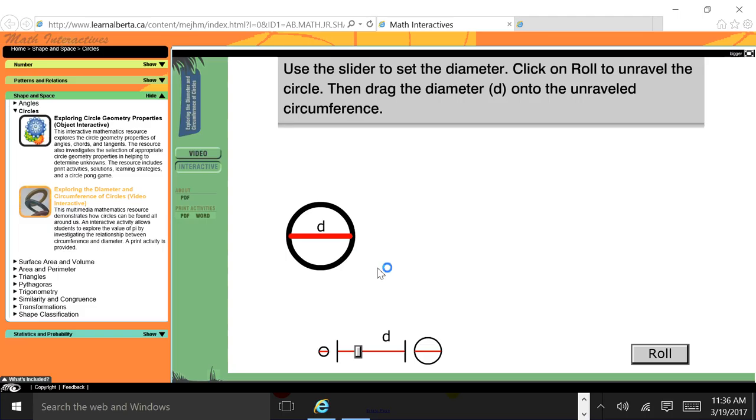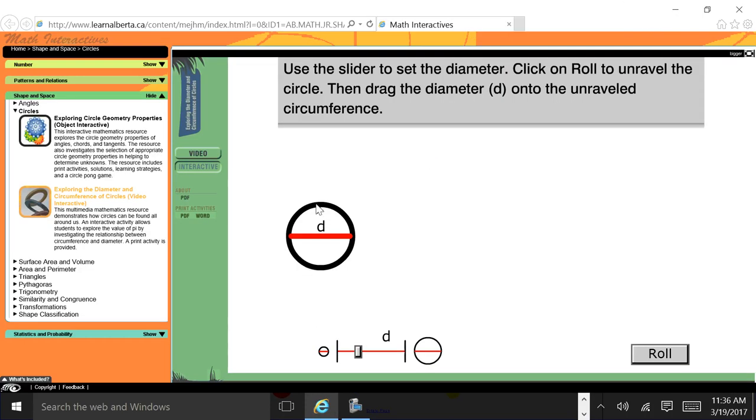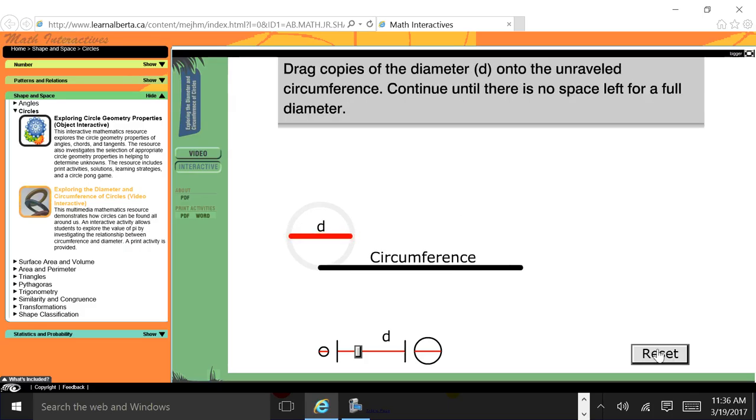So say pi, click on the words to see a short demonstration. In this demonstration we have a circle, we're going to use the slider to set the diameter, click on roll to unravel it. So if I had a scissor and I cut this, imagine this is like the crust of a pizza or a bicycle tire. So we cut, now drag copies of the diameter onto the unraveled circumference. So one, two.